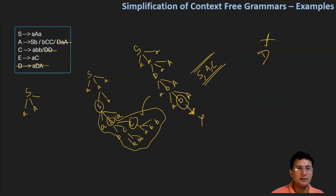After removal, we have S produces aAa, and A produces either SB or BCC. Let me take this as BCC. There's only one way to expand C: that is abb, and this is abb again.